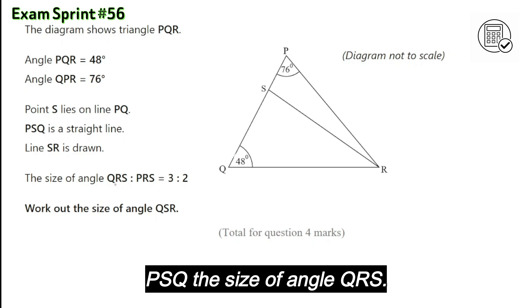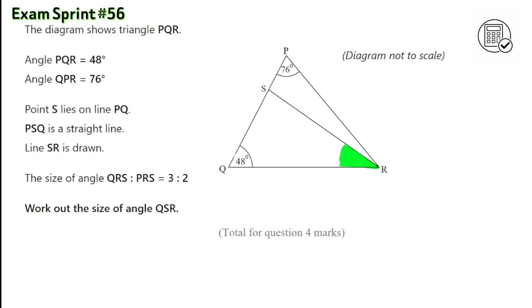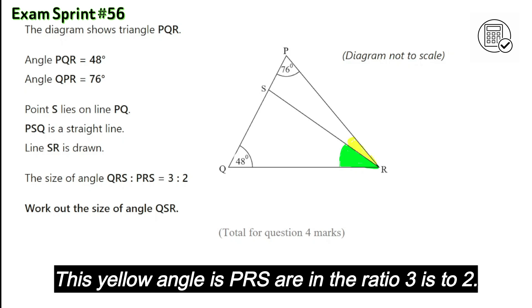The size of angle QRS, this is QRS, and PRS, this yellow angle is PRS, are in the ratio 3 to 2.